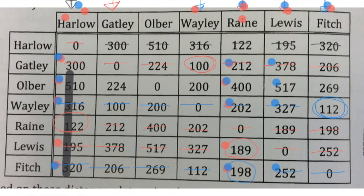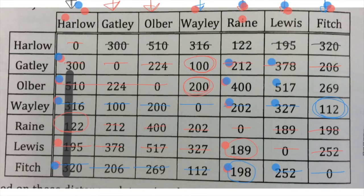So now we're looking down this one, this one, this one — all but Obler. What's the smallest number not crossed out? It's 200, which is Obler. And now we can cross out all of those.